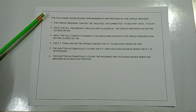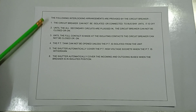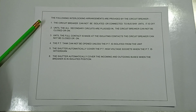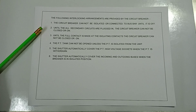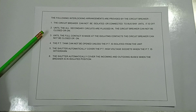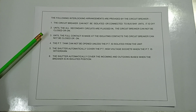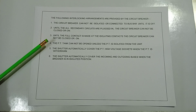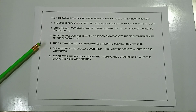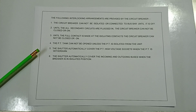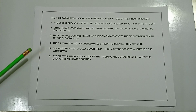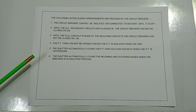The following interlocking arrangements are provided by the circuit breaker: the circuit breaker cannot be isolated or connected to the bus bar until it is off; the circuit breaker cannot be closed until all secondary circuits are plugged in; the circuit breaker cannot be closed until full contact is made at the isolating contacts; and the PT tank cannot be opened unless the PT is isolated from the unit. The shutter automatically covers the PT high-voltage socket when the PT is withdrawn, and covers the incoming and outgoing buses when the breaker is in isolated position.